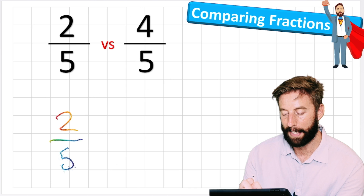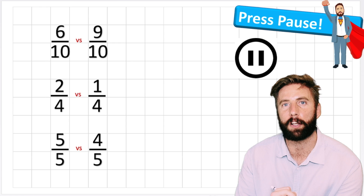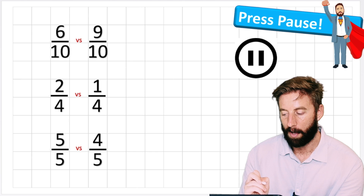Now let's go back and answer these questions using those symbols we learned. Three ninths versus four ninths - four ninths was the greater value because we had four parts of nine compared to only three parts. We could write: four ninths is greater than three ninths. Or we could flip that and write: three ninths is less than four ninths - and that would still be right. Six sevenths is greater than three sevenths, or three sevenths is less than six sevenths. Four fifths is greater than two fifths, or two fifths is less than four fifths.